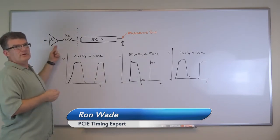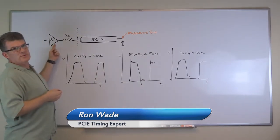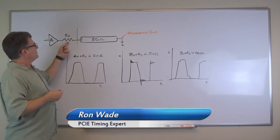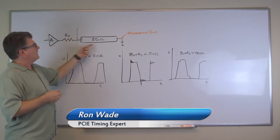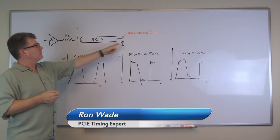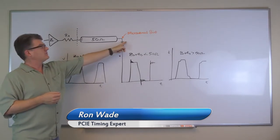We have a single-ended buffer here with the output impedance represented by Z naught. We have a series termination resistor and a 50 ohm transmission line with the load represented by this capacitor at the end.